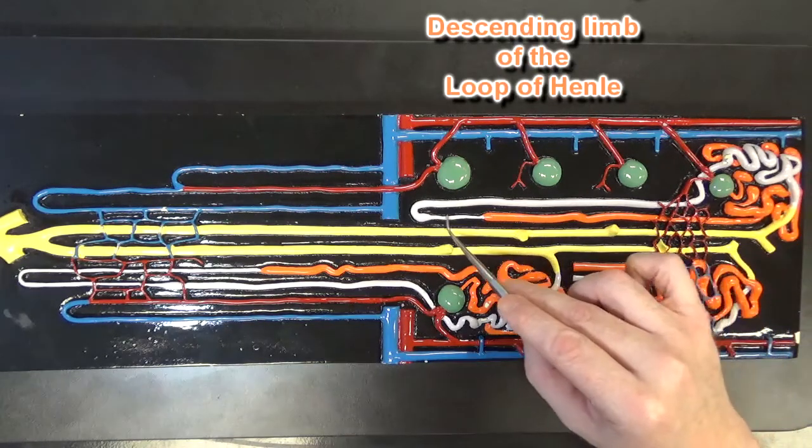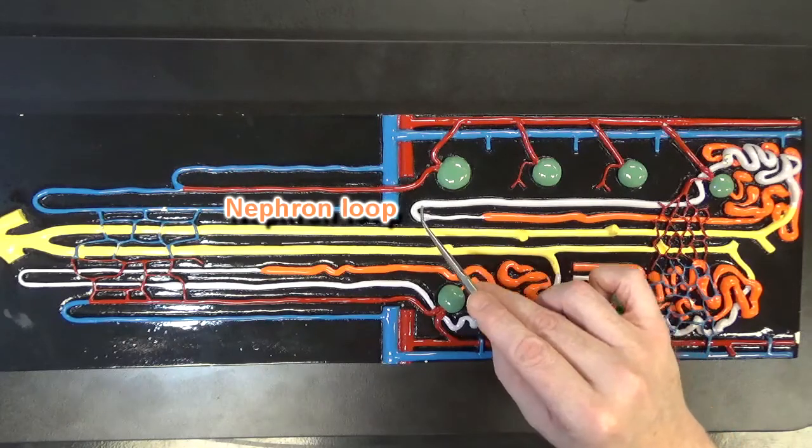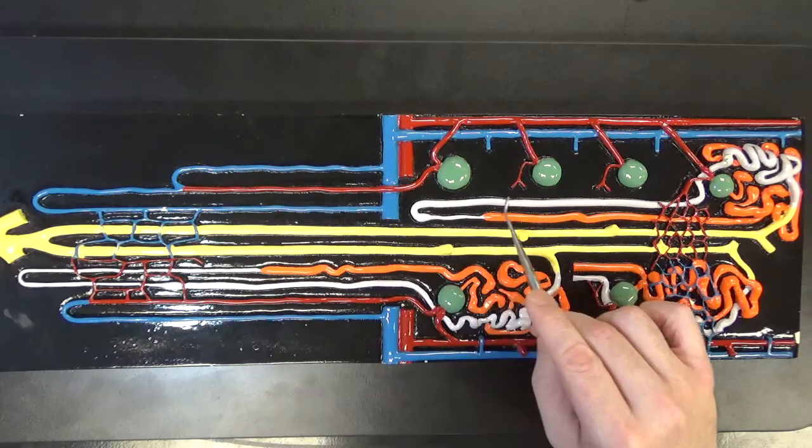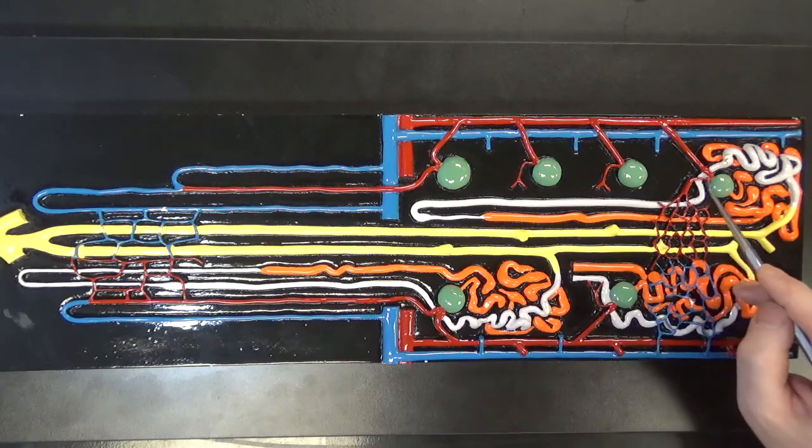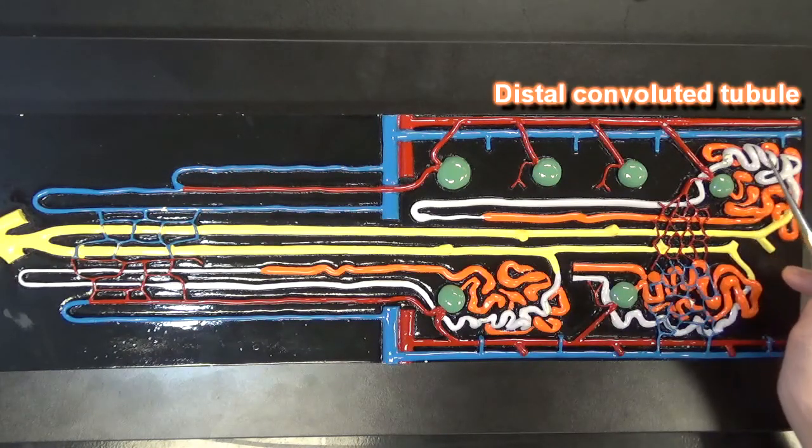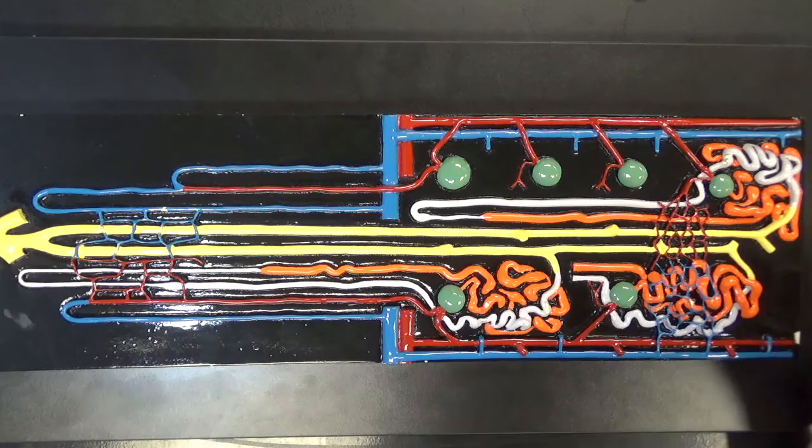Here's the loop of Henle or the nephron loop and then we've got the ascending limb of the loop of Henle over here and that will lead to the distal convoluted tubule. Now the word convoluted means coiled.